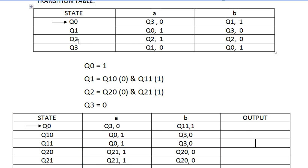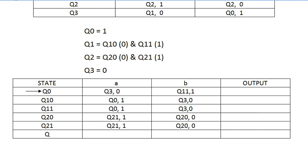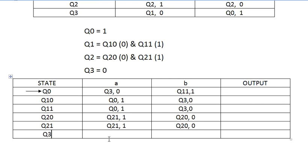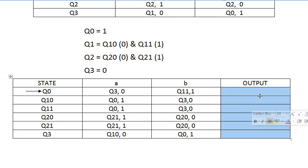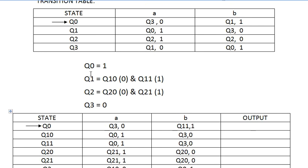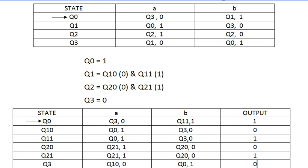Now the only remaining state is Q3. Q3 on seeing A goes to Q1 with output 0, so the state is Q1_0 with output 0. Q3 on seeing B goes to Q0, which has a fixed output of 1, so this is Q0 with output 1. Now we fill the output column: Q0 output is 1, Q1_0 output is 0, Q1_1 output is 1, Q2_0 output is 0, Q2_1 output is 1, Q3 output is 0.